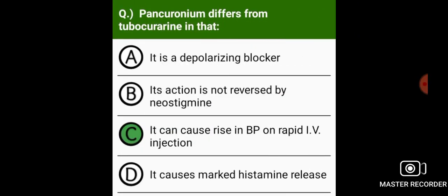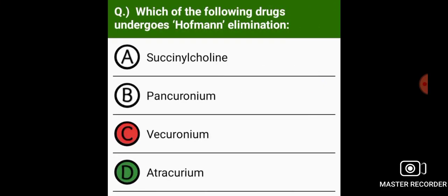Pancuronium differs from tubocurarine in that it can cause a rise in blood pressure on rapid IV injection. Which of the following drugs undergoes Hoffman elimination?